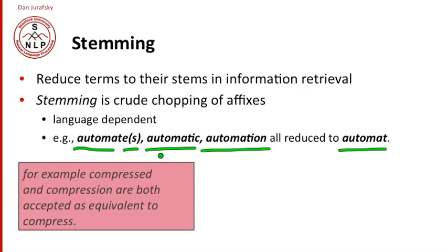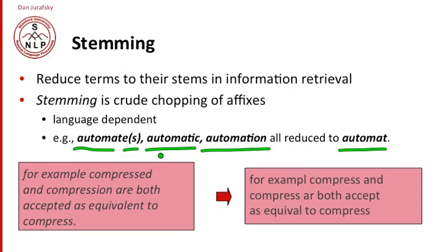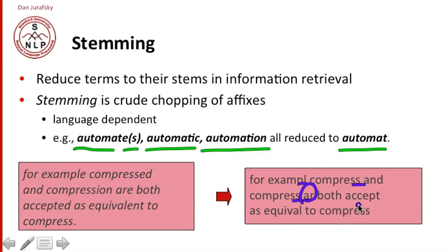Here's an example: 'compressed and compression are both accepted as equivalent to compress.' That's the text. If we stem that text, you can see that we've lost the 'e' on 'example,' and 'compressed' and 'compressing' have both turned into 'compress.' And we used R as our representation rather than B in this particular example.